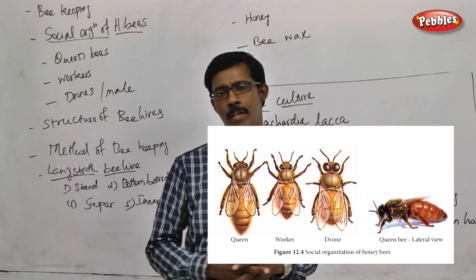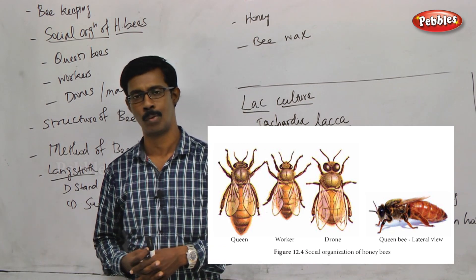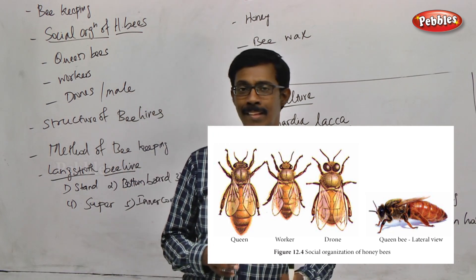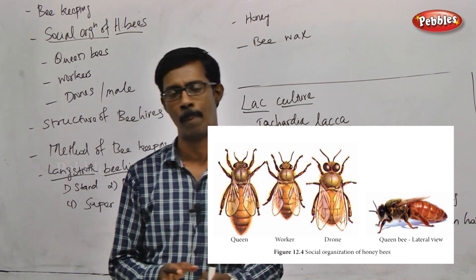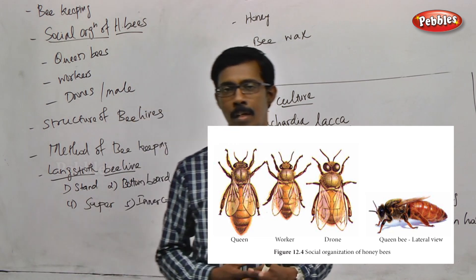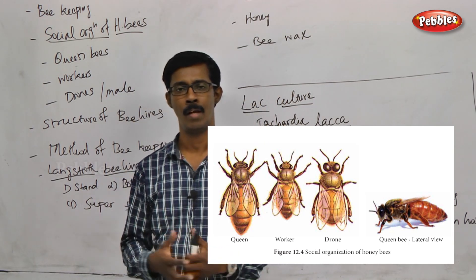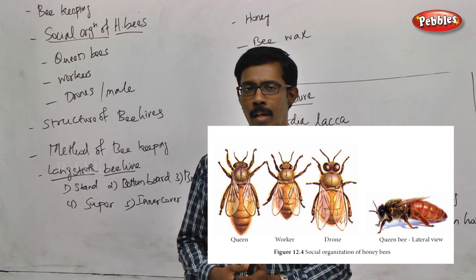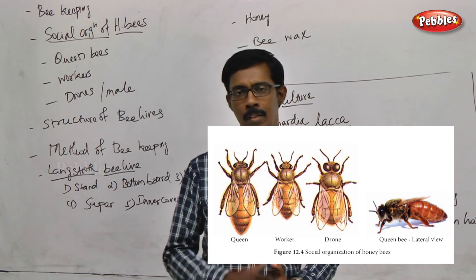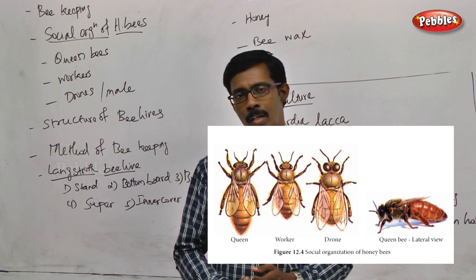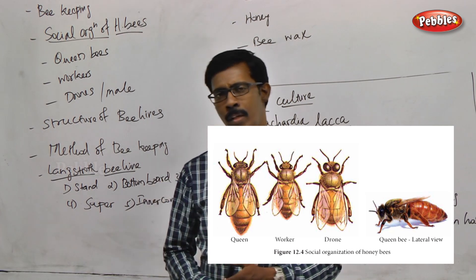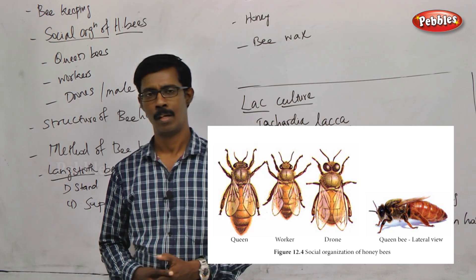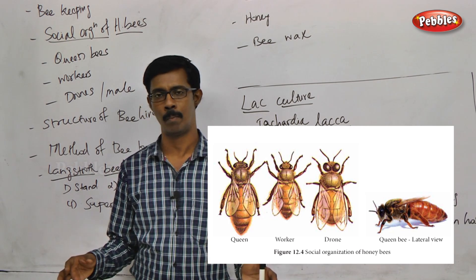What about the remaining bees? Royal jelly is a very unique substance produced for the queen bee. The queen bee leads a very important life in the hive. What do we know about the queen bee?